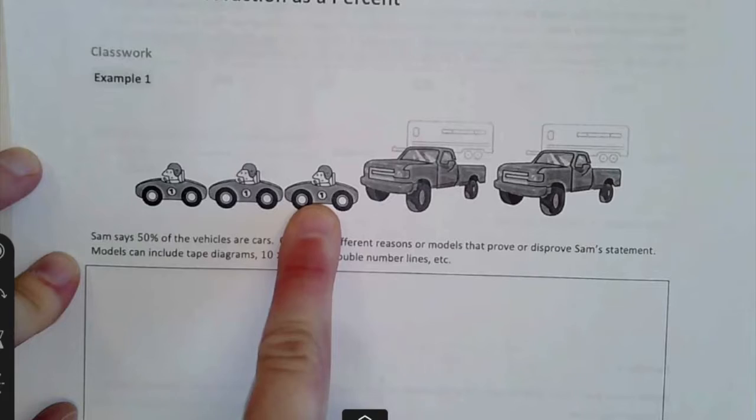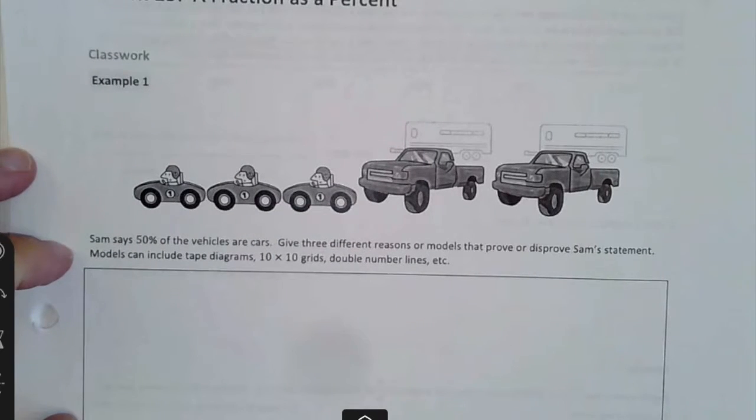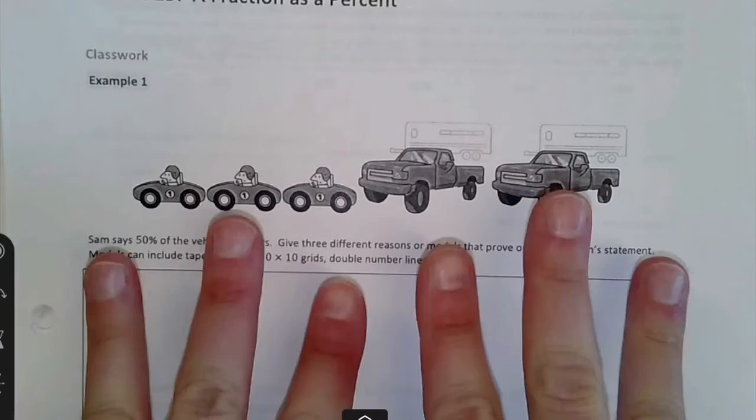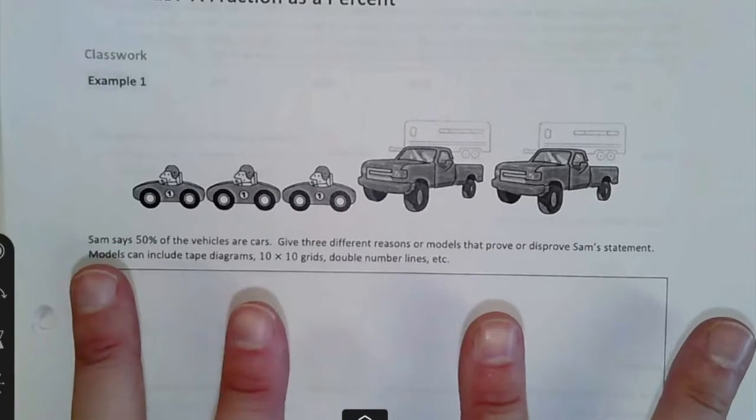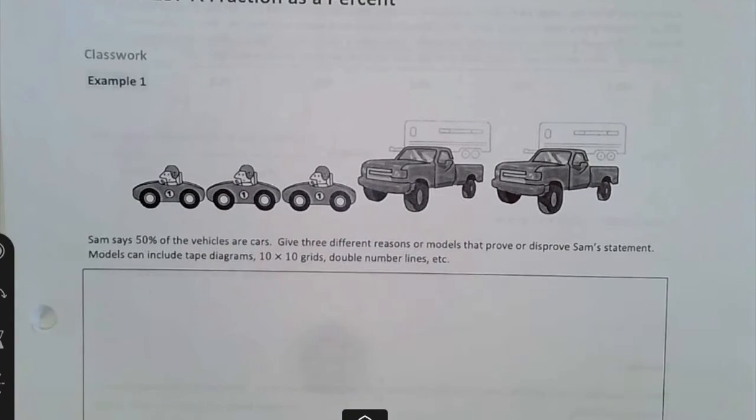When we look at this, do we see 50% are cars? I know that's not true. If 50% were cars, then you would want three and three, or you would want two and two of each. How can we show that that is not true?